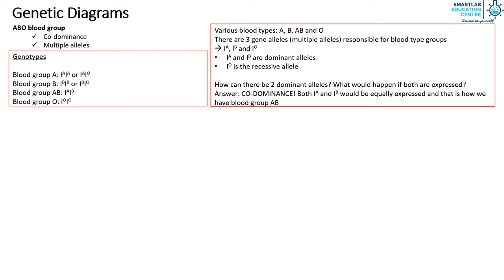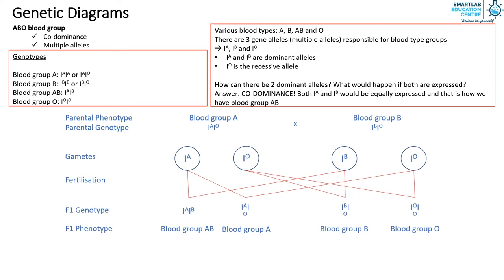Now let's see an example of how a genetic diagram for blood group can be constructed. Let's say we have a heterozygous parent of blood group A and a heterozygous parent of blood group B. The F1 generation would have an equal chance of being blood group A, B, AB, or O. This does not follow the ratio we have studied previously, but that is because multiple alleles are involved here.